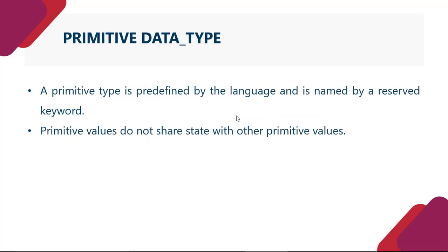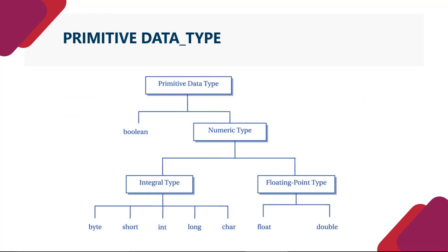Primitive data type - a primitive type is defined by the language and is named by a reserved keyword. Jitne bhi primitive hum Java programming mein use karte hain, woh hamesha define hote hain kisi na kisi keyword se. Aur jo primitive values hote hain, woh share nahin karte states ko with other primitive values. Ek hierarchy hai jo primitive data type - boolean and numeric type. Numeric type mein bhi do type ke - integral type and floating type. Jo integral type hai, yoh five type ka hai - byte, short, int, long, and char.